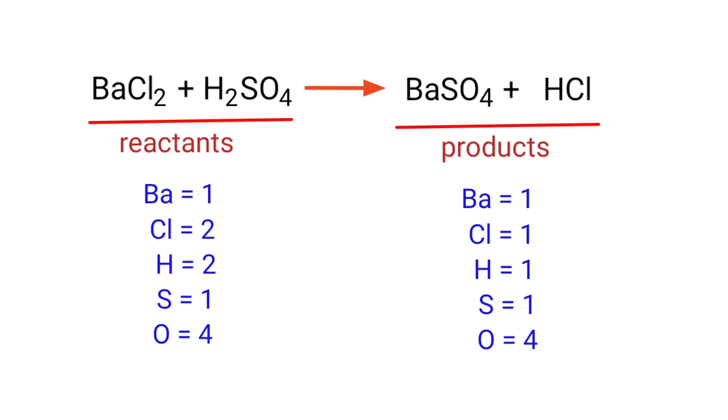On the products side, there are 1 barium atom, 1 chlorine atom, 1 hydrogen atom, 1 sulfur atom, and 4 oxygen atoms present.